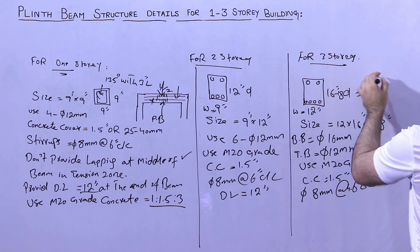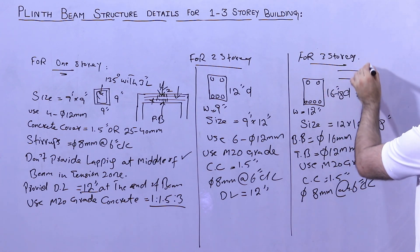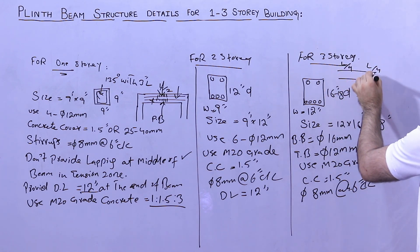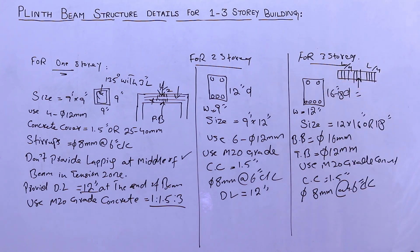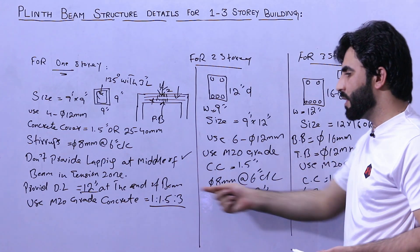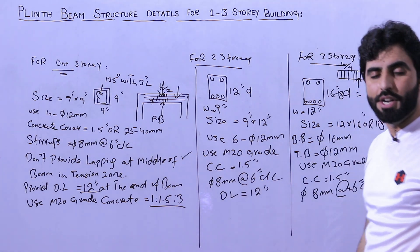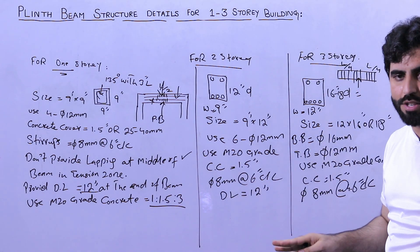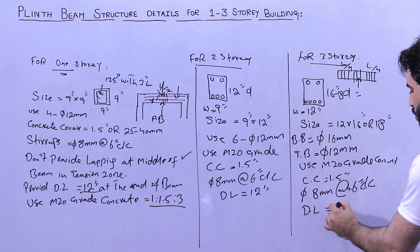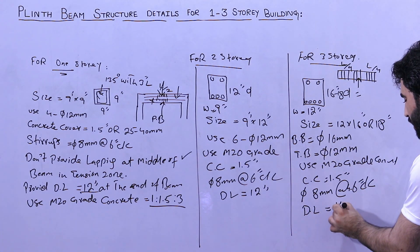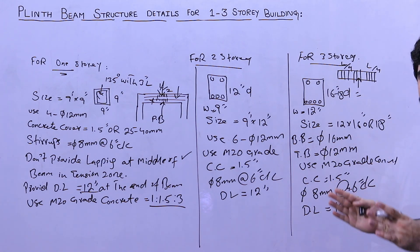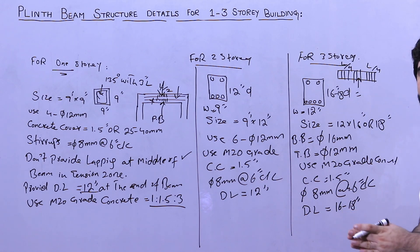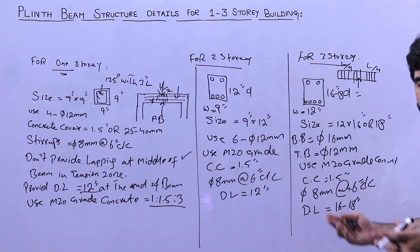In the long section, at a distance of L by four or L by three, provide spacing of four inches. After L by four you can increase the spacing up to six inches. Provide development length of 18 inches — not 12 inches as for lower stories — because this is a three story building.